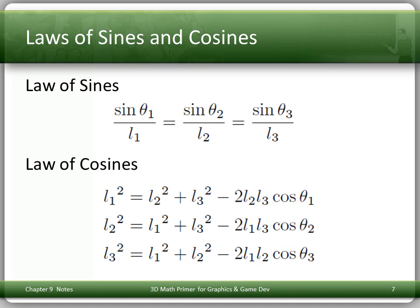You probably met the law of sines and the law of cosines in school. The sine of theta1 over L1 equals the sine of theta2 over L2 equals the sine of theta3 over L3. The law of cosines relates the lengths with the angle and involves squares. For example, L1 squared is L2 squared plus L3 squared minus twice L2 L3 cosine of theta1.